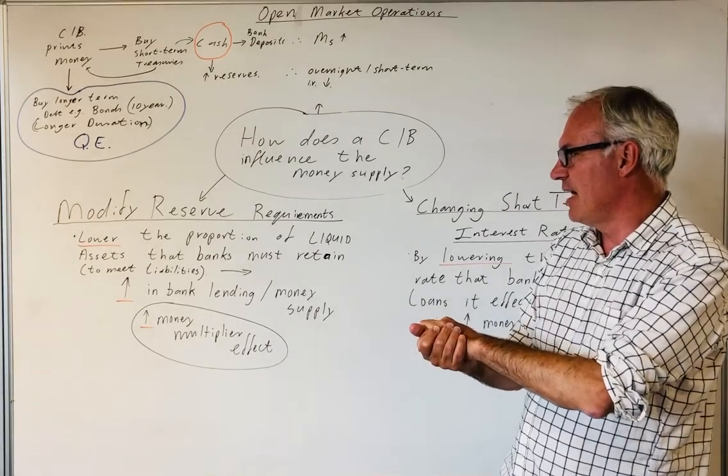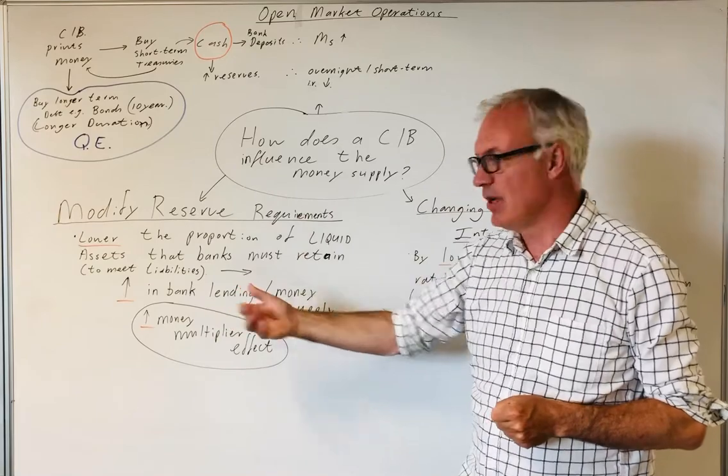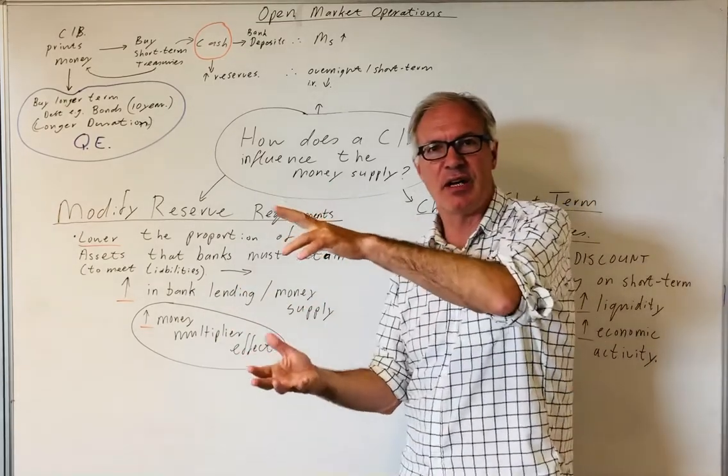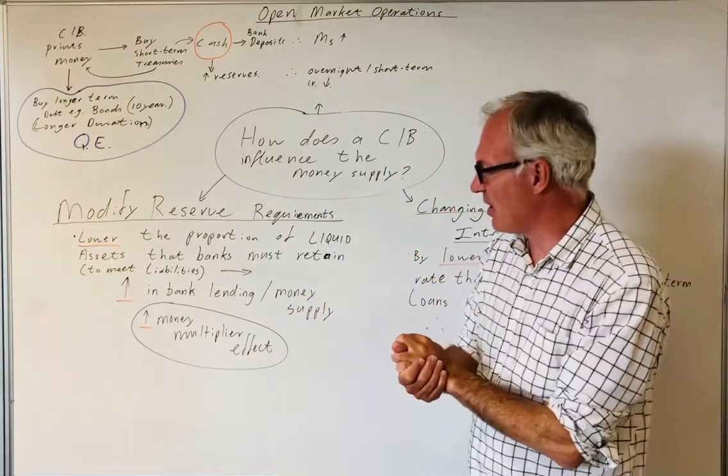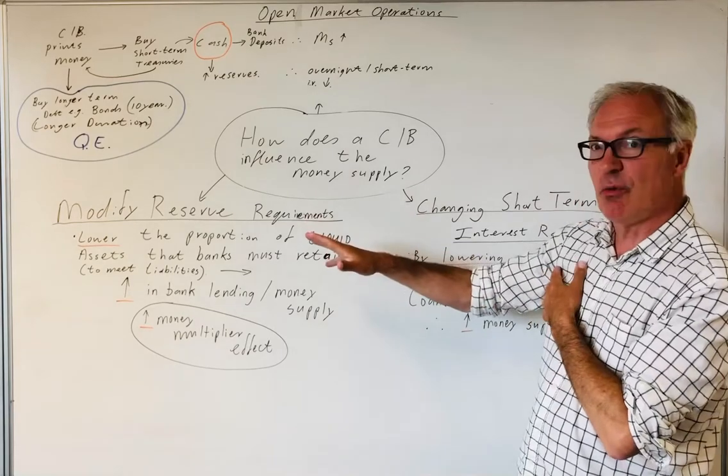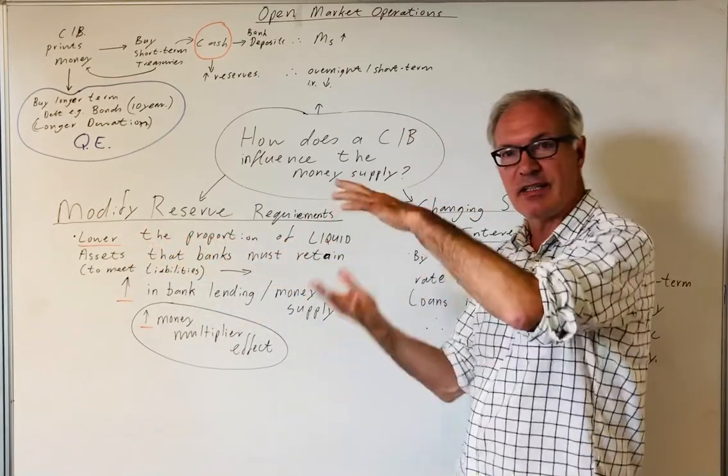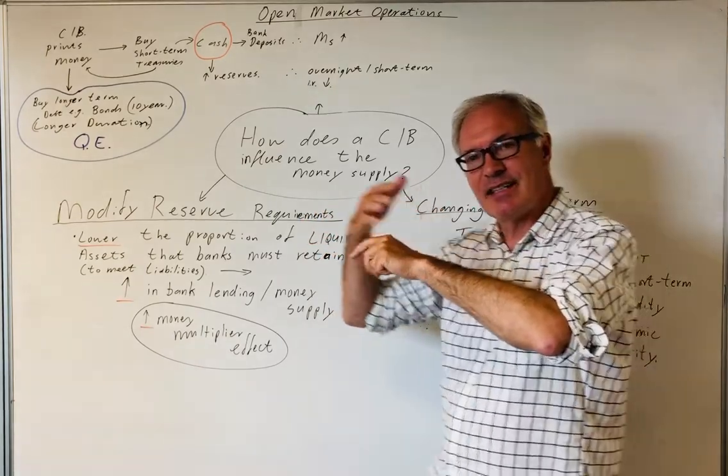If you lower the proportion of liquid assets it needs to retain, then the bank will be able to lend out more and will increase the money multiplier effect and will increase the money supply, such as M4, a broad definition of the money supply. Similarly, the other way around, you could increase the proportion of liquid assets the bank keeps and therefore it's able to lend out less.